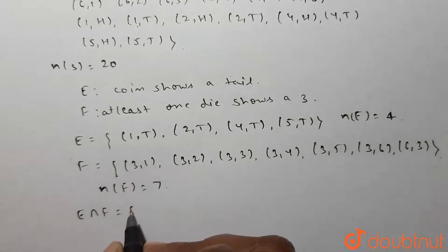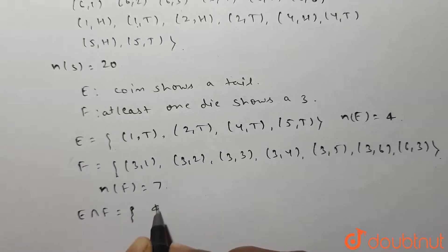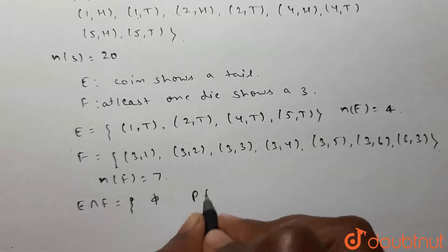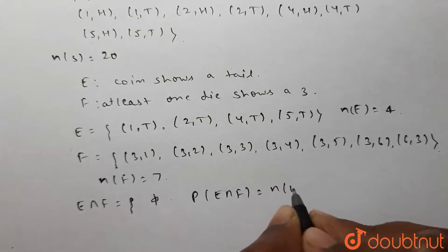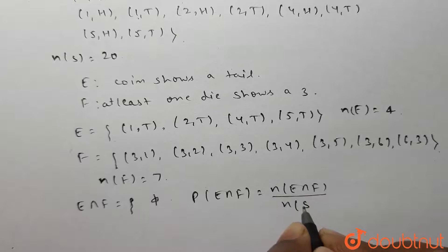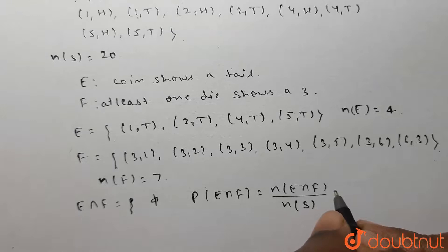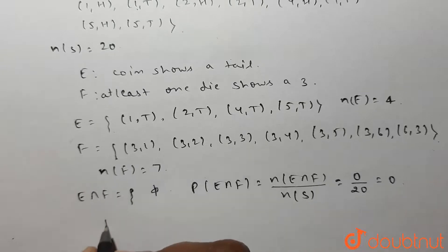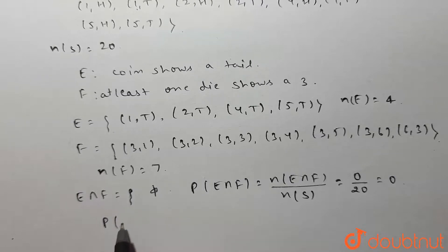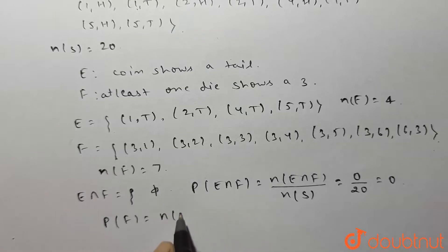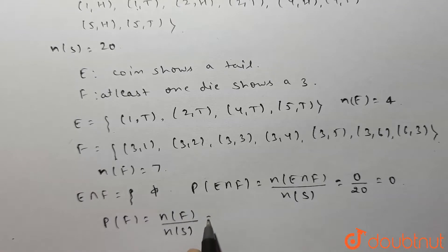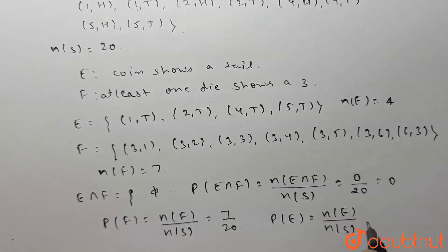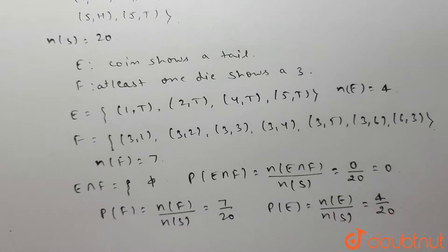Now E intersection F — there are no common elements in set E and set F, so E intersection F is the empty set. Therefore the probability of E intersection F equals zero divided by twenty, which is zero. The probability of F equals seven by twenty. Similarly, the probability of E equals four by twenty.